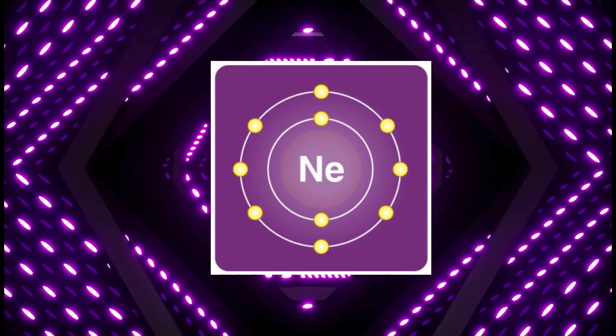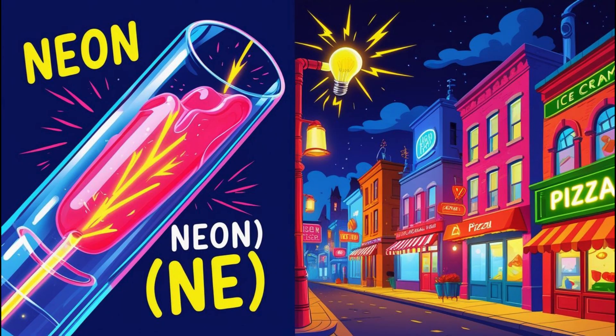Neon. Neon is a glowing gas. When electricity passes through it, neon lights up with bright colors. That's why we see neon signs glowing in red, orange, or green at shops and restaurants.